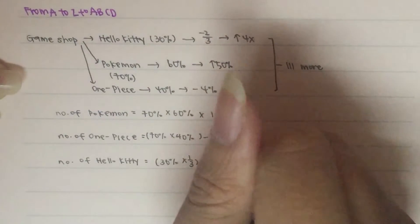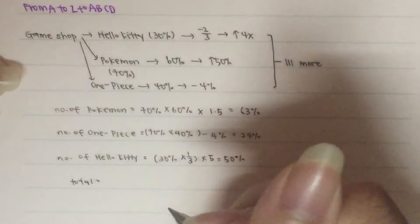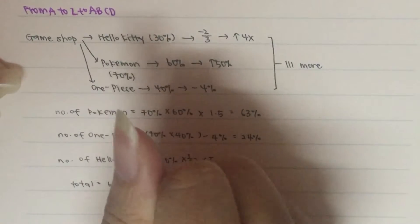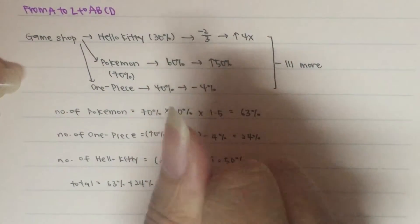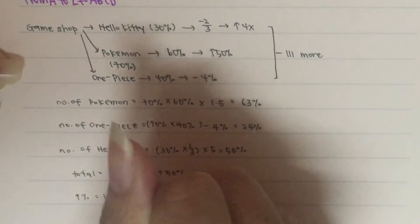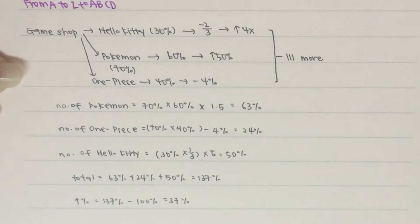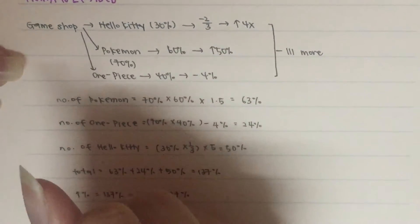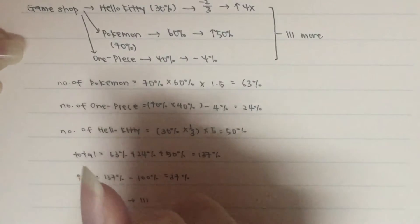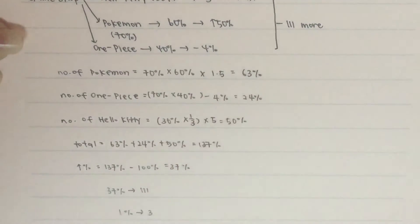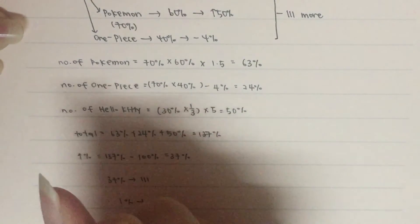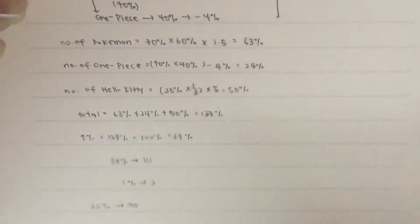So the total will be equal to 63% plus 24% plus 50% which will end up to be 137%. Then the increase percent will be equal to 137% minus initially 100% which gives us 37%. So this 37% will actually be the 111 that is reflected over here. So we actually calculate it to be 1% is equivalent to 3 Stickers. Then for Hello Kitty Stickers, Hello Kitty Stickers is 30% so 30% would be equal to 90.